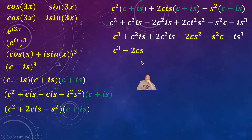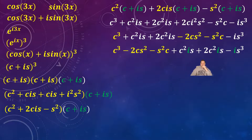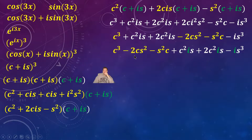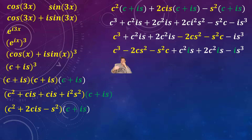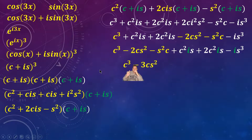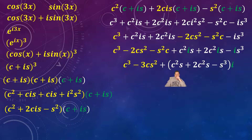Regrouping, it's going to be: c cubed minus 2c·s squared minus s squared·c, plus c squared·i·s plus 2c squared·i·s minus i·s cubed. Each of the white terms has i as a common factor, so we pull that outside. Also notice that negative 2c·s squared and negative s squared·c have the same variable parts, so they combine: it's going to be c cubed minus 3c·s squared plus i times (c squared·s plus 2c squared·s minus s cubed).